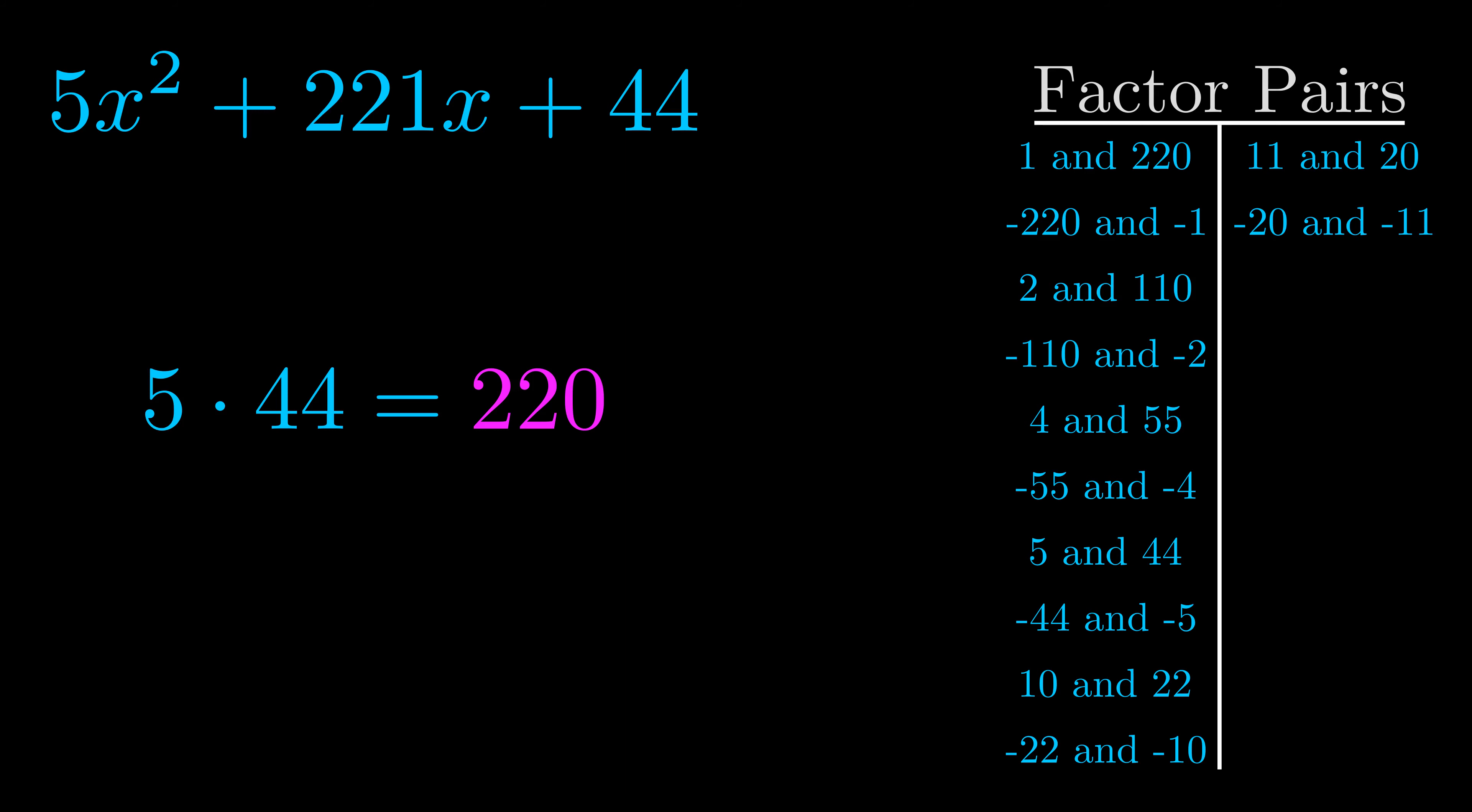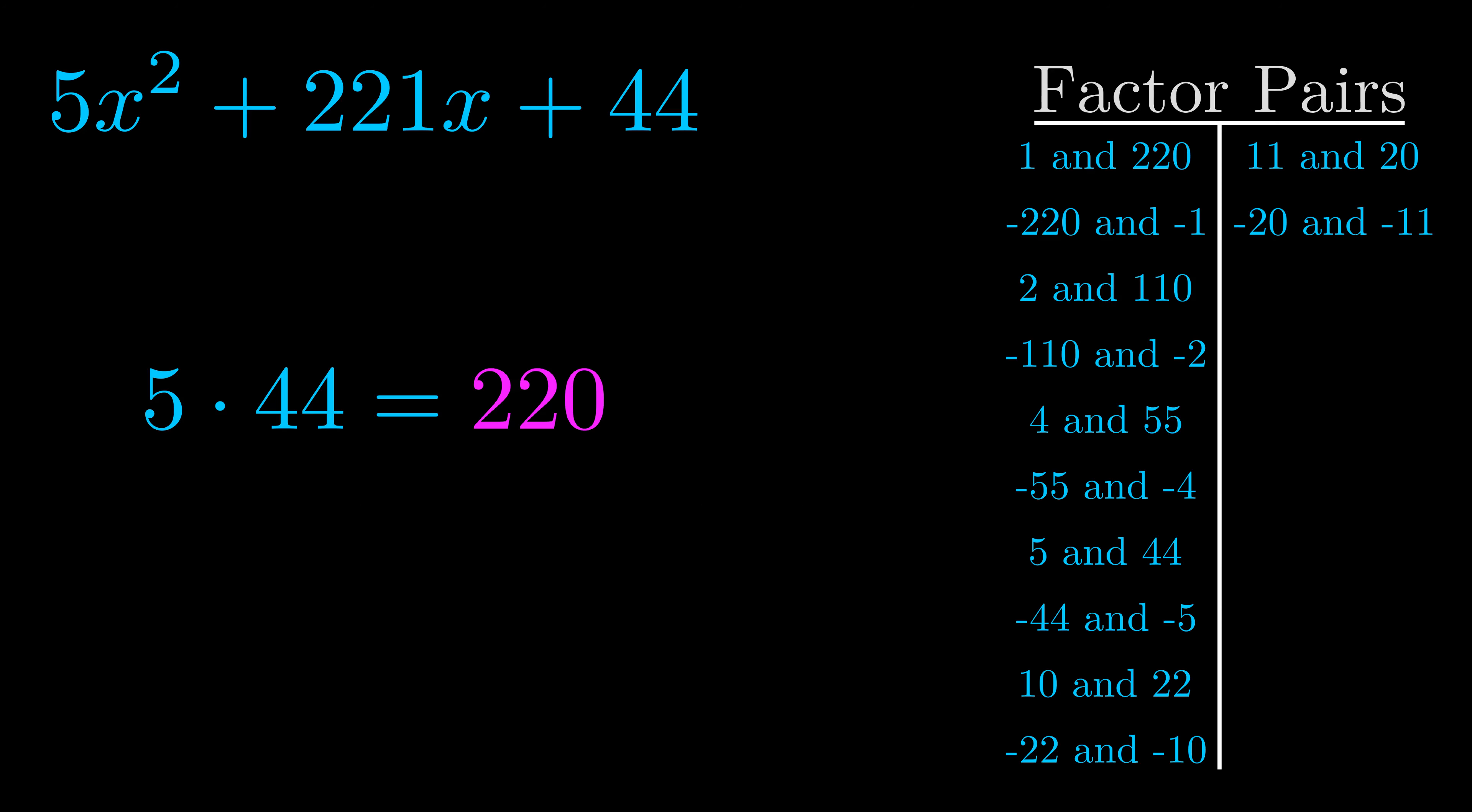Now once you have these factor pairs, the goal is to find which of these pairs adds to the b value. The b value is the coefficient on the x term. That's the middle term, the one that we haven't done anything with yet.